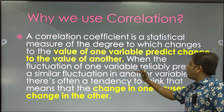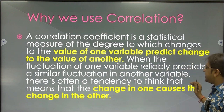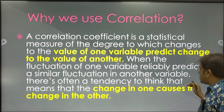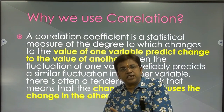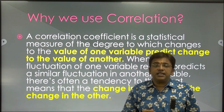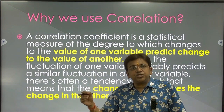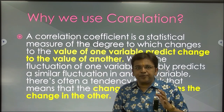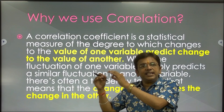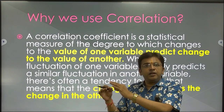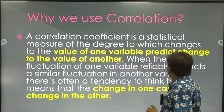If it has a positive impact you are going to use that oil frequently; if you are using that oil and there is hair loss, you are going to avoid it. There is a direct relationship between one variable and another. When the fluctuations of one variable reliably predict a similar fluctuation in another variable, there is a direct relationship between the two variables. If the growth of hair is positive you say the hair oil is of best quality; if there is hair loss, the impact of hair oil is negative.